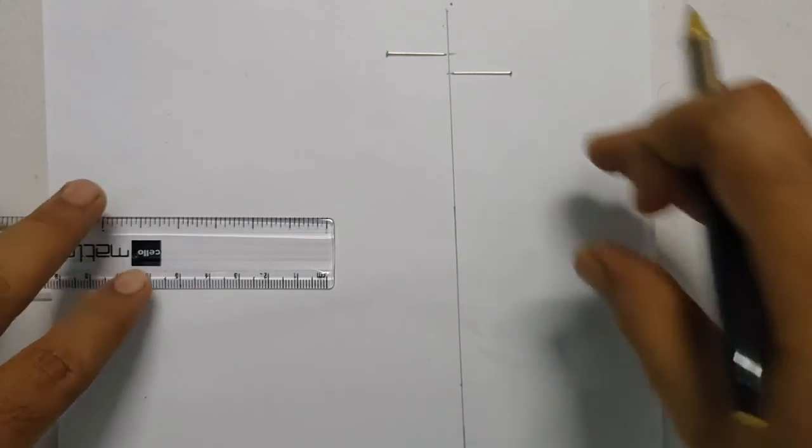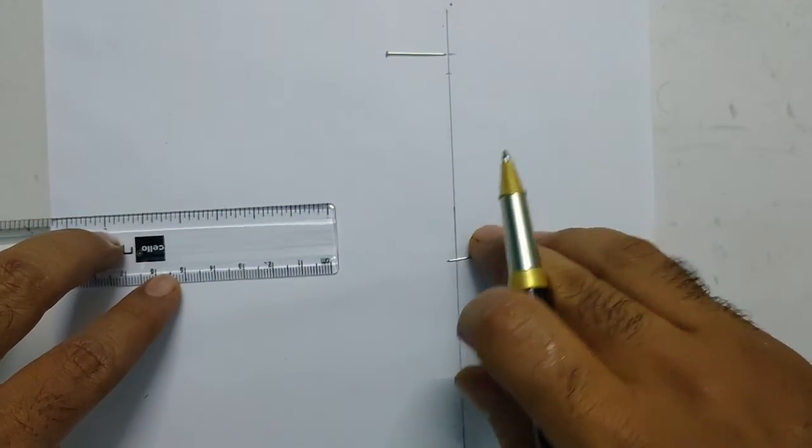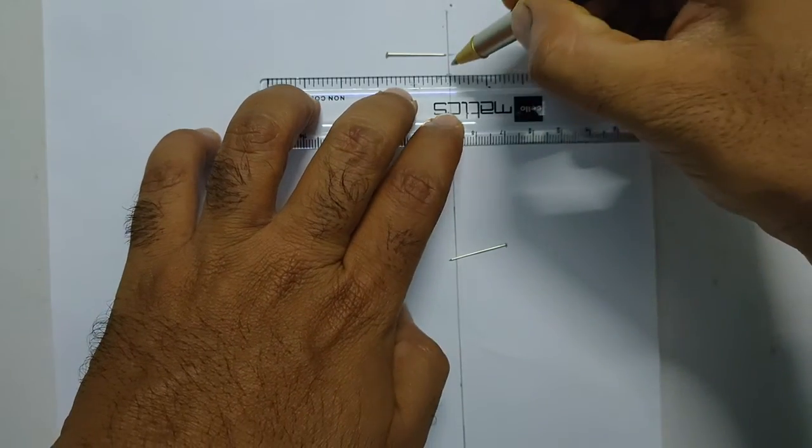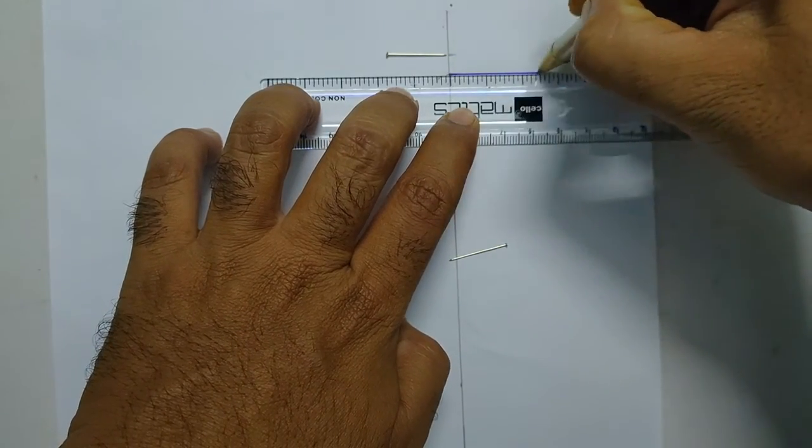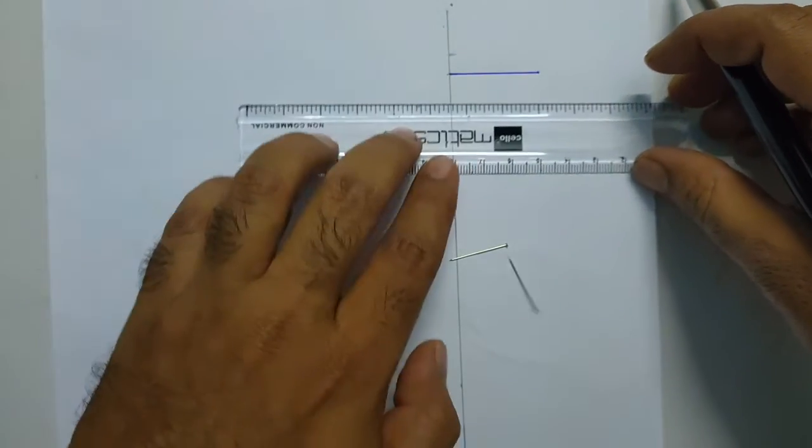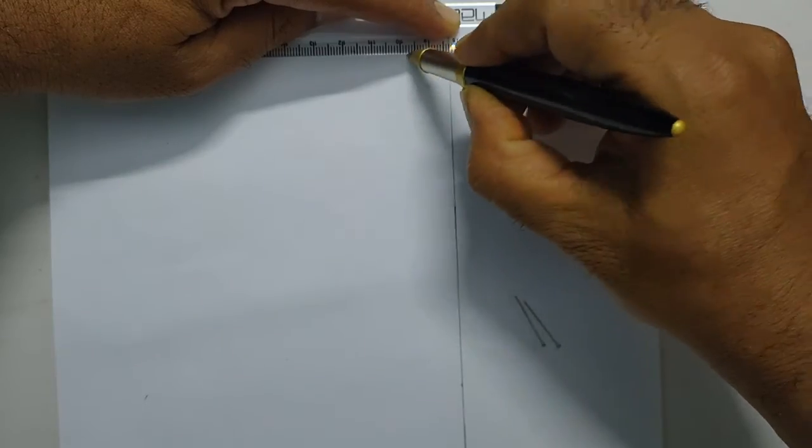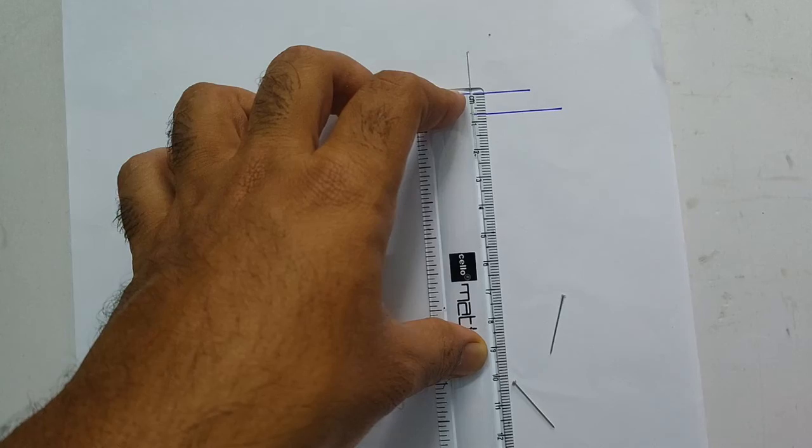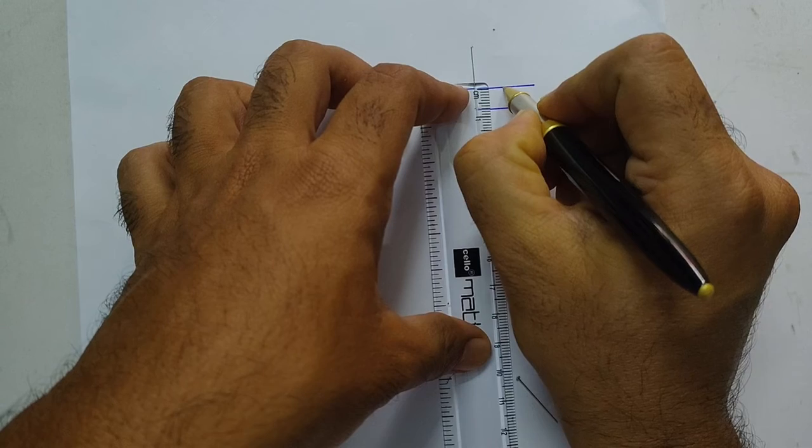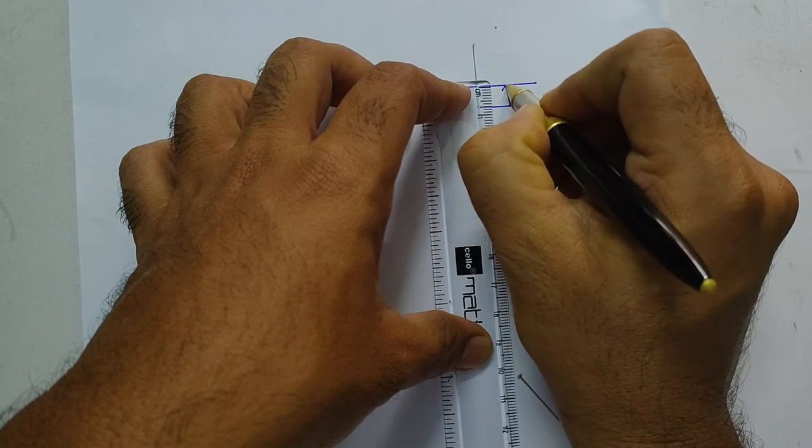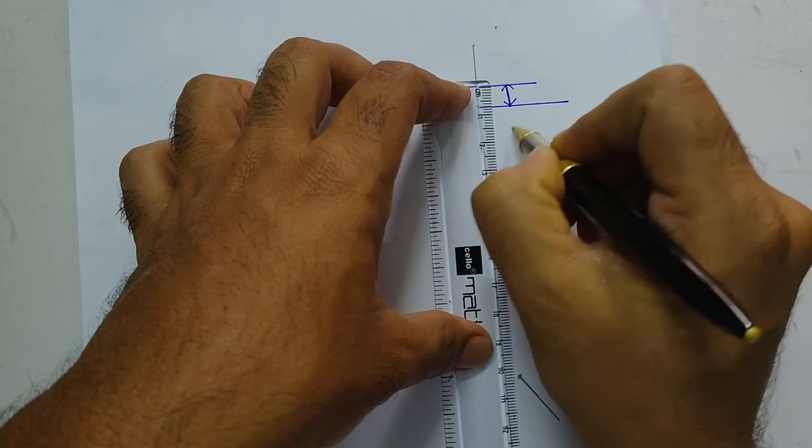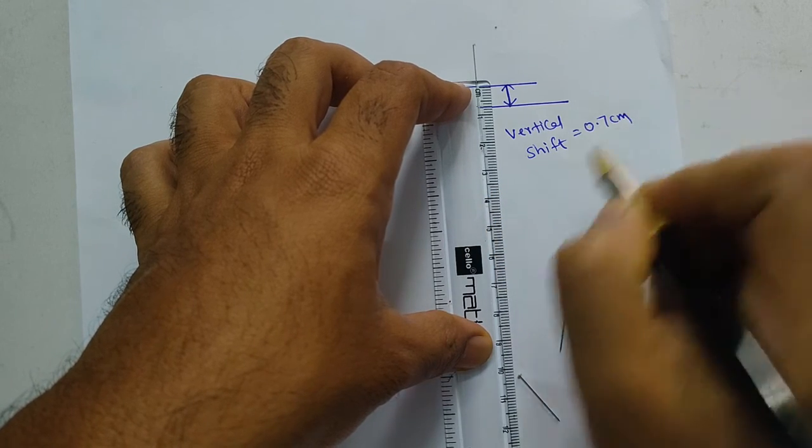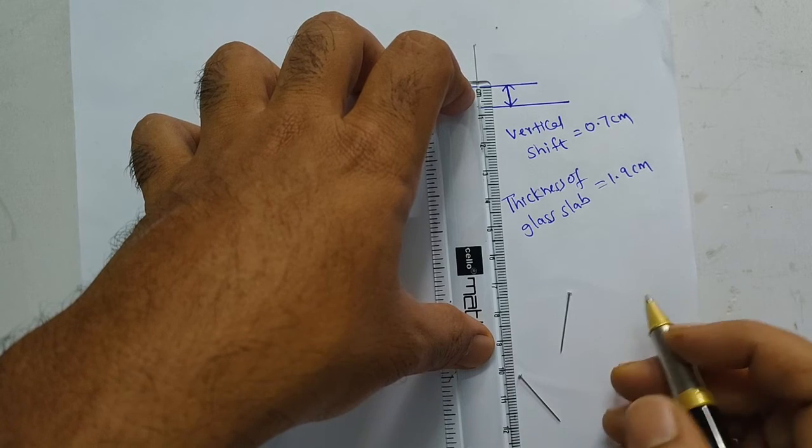So now draw a perpendicular line from the second pin to the line on which first pin is placed and you can call this point as Q and find the distance between the first pin and the second pin. So we may call it as a vertical shift. So we came to know vertical shift as 0.7 centimeters and thickness of glass slab as 1.9 centimeters.